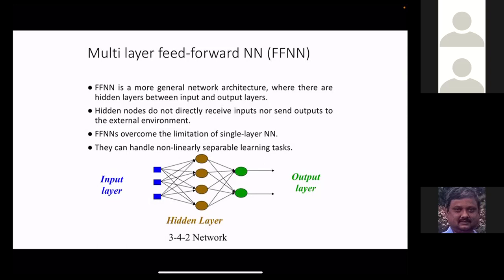If you plot the error value for all possible weight combinations, you get something called an error surface. Imagine there are only two weights w1 and w2, with the z-axis being the error — as you vary w1 and w2, the error value changes, and connecting them all gives an error surface. The goal of the optimization problem is to find the set of weight values at the lowest point of this error surface — the minimum error point.